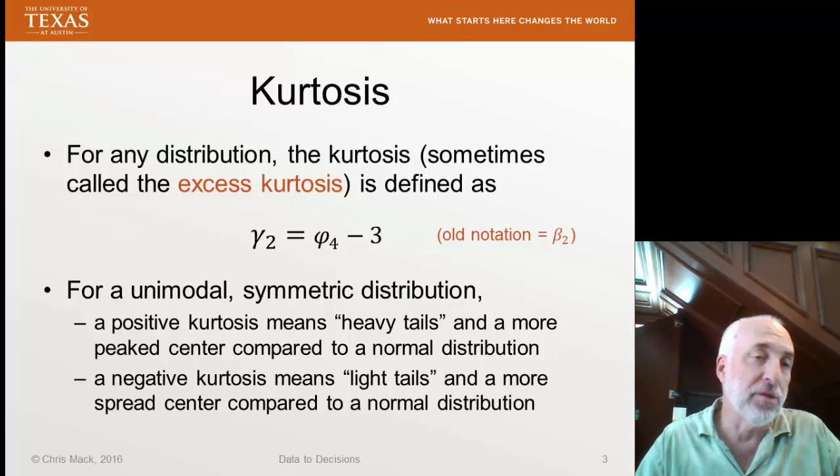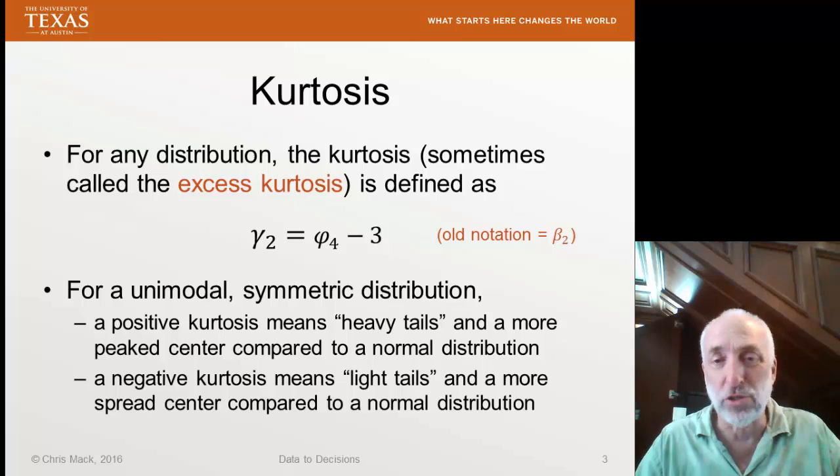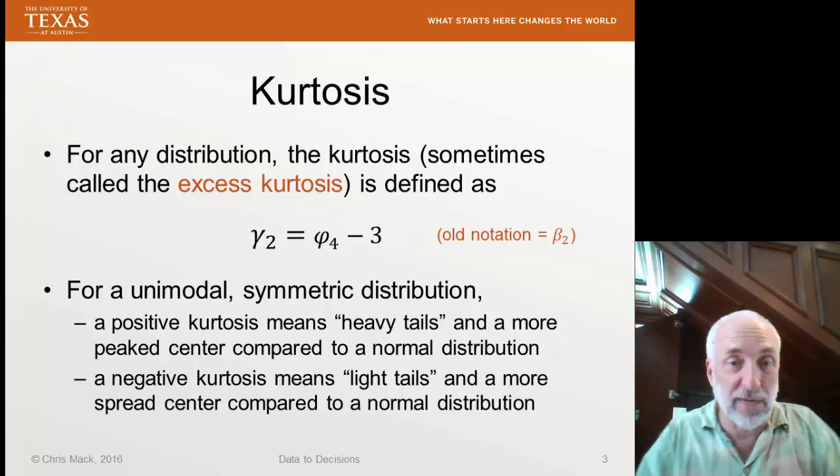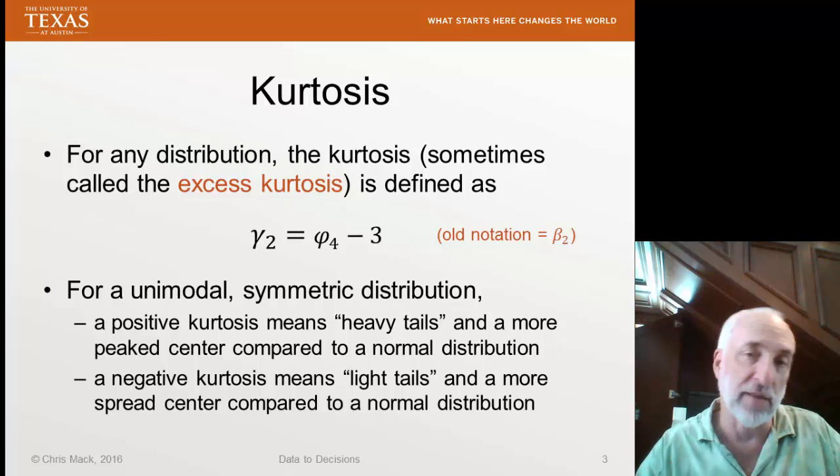Well, since the area under a probability distribution is always 1, if the tails are heavy, that means the center is narrower or more peaked. If the tails are light, it means the center is broader. So these two things always go together.